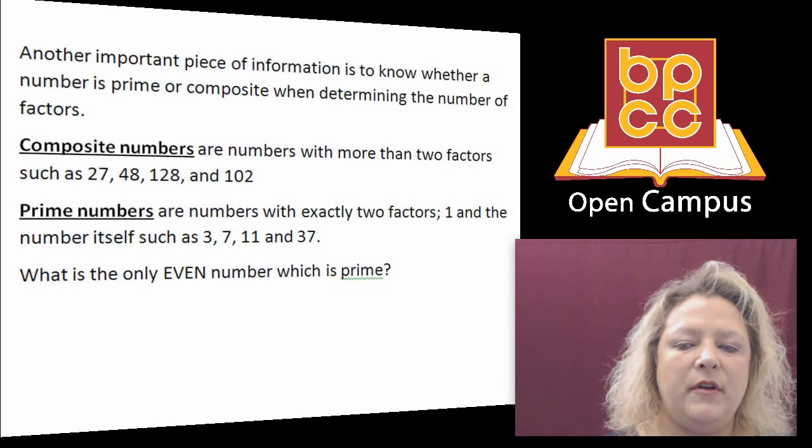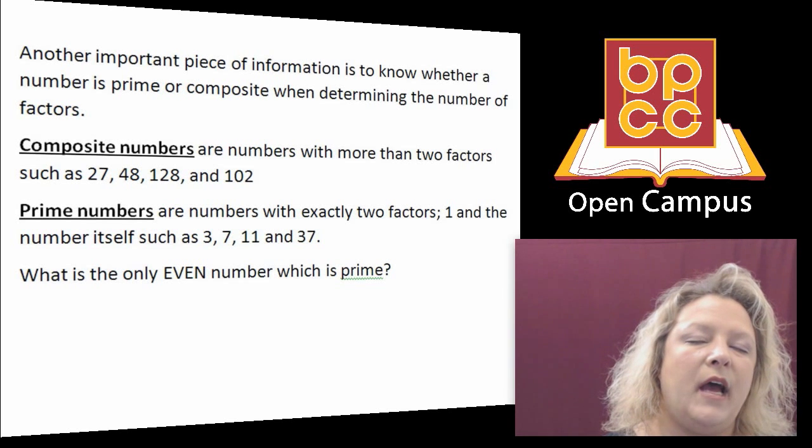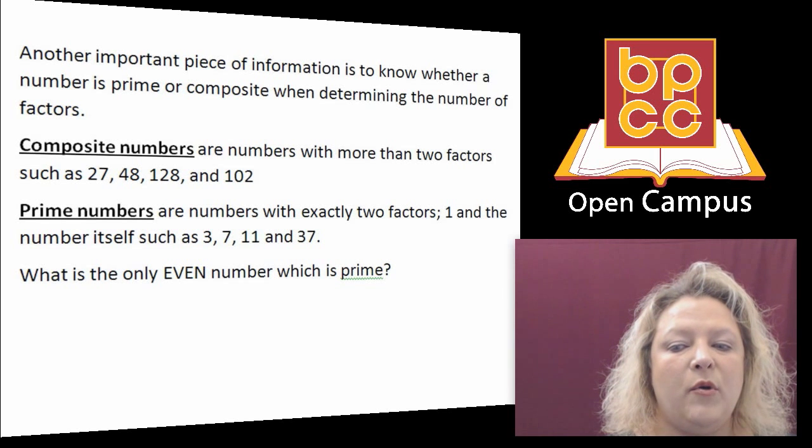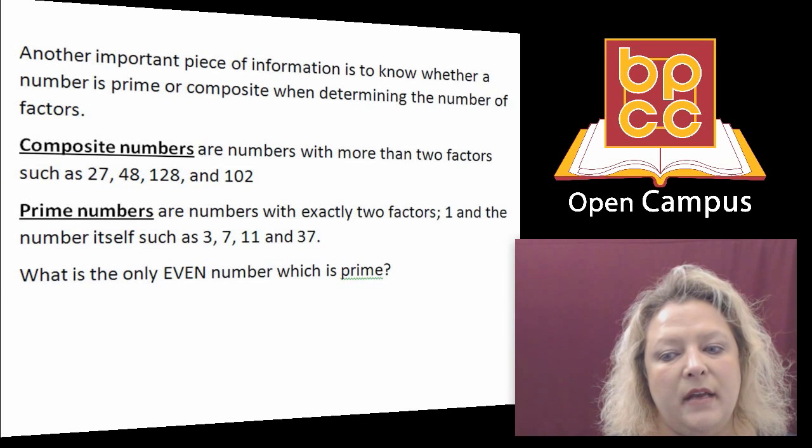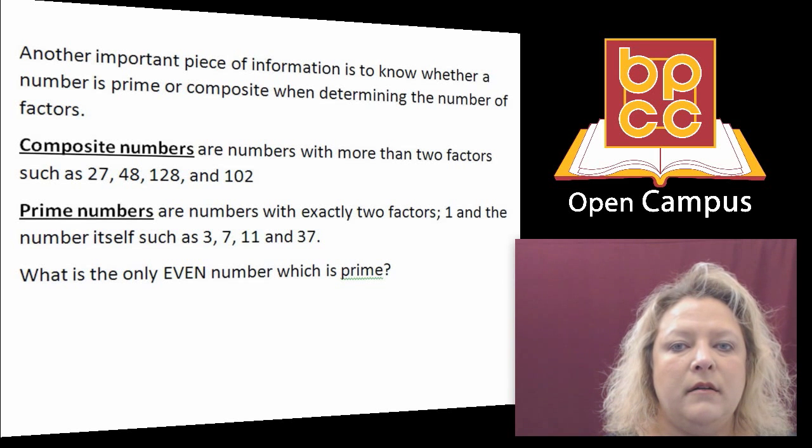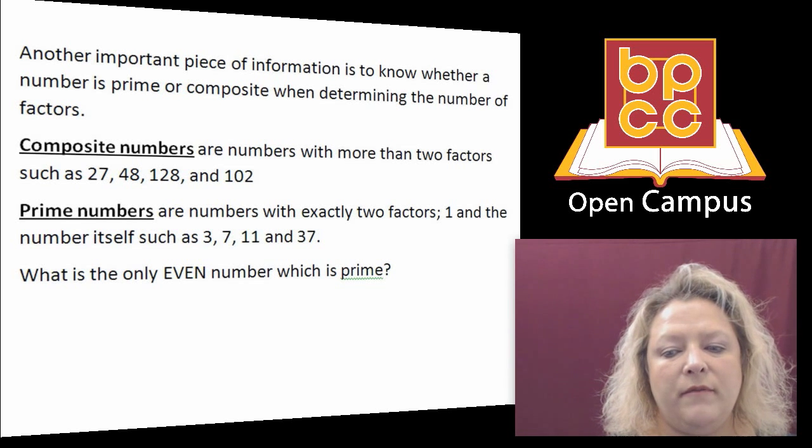Prime numbers are numbers that only have two factors like the number three, three times one, seven, eleven, thirteen, and thirty-seven are a few.